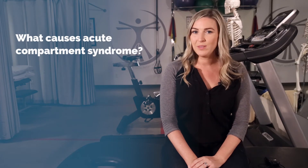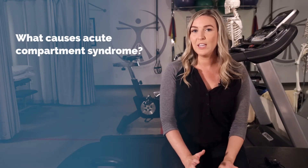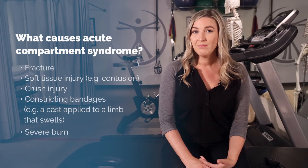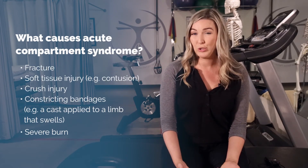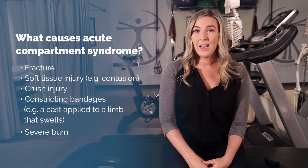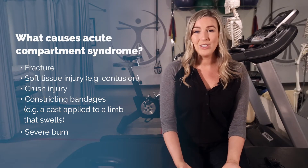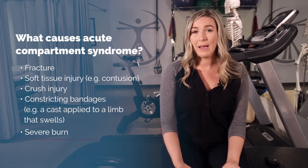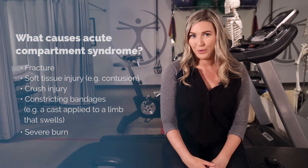Acute compartment syndrome typically develops after an injury — for example, a fracture, a soft tissue injury like a contusion, a crush injury, constrictive bandages such as when a cast is applied too tight or applied to a limb that's swelling, or after a severe burn.